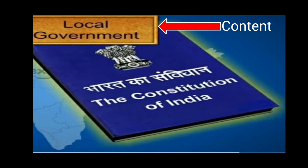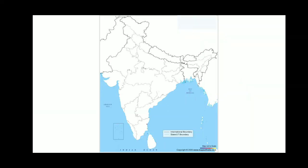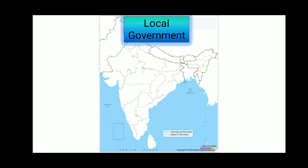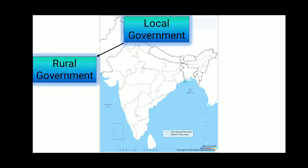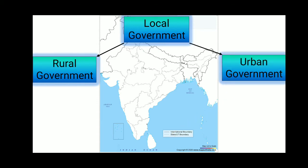In this video I am going to explain local government structure in India. When we talk about local government, it is of two types: one rural government, which is very famously known as Panchayati Raj, and the other is urban government. First we will discuss the features of rural government in India.